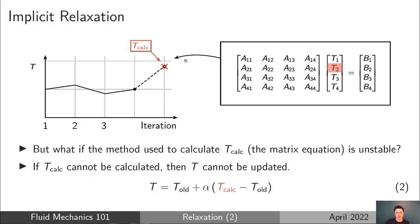If we can't find a solution to the matrix equation, we can't calculate T calc, and because we can't calculate the update to the solution, we can't apply a fraction of it either. So we needed T calc to be able to update the solution, and if we can't calculate it, we can't apply relaxation in the first place. The way we get around this is by using implicit relaxation, which is the focus of this talk.